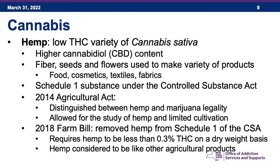The 2018 Farm Bill actually removed hemp from the Schedule I group of cannabis plants, but with special definitions: hemp must be less than 0.3% THC on a dry weight basis. At that very low percentage, hemp is now considered to be like any other agricultural product, like other plants and fruits.